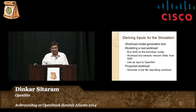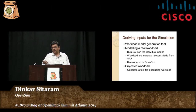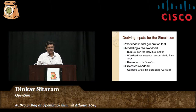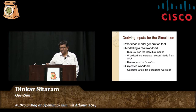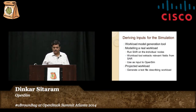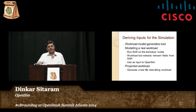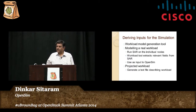One question is how do you derive inputs for the simulation. To model application performance accurately, you need to know a lot about how the application consumes resources. There are two ways of doing it. We have a workload model generation tool. If you're modeling a real workload, you run SAR on the individual nodes, and then the workload tool extracts the relevant fields from SAR and produces the input that OpenSim needs. The other case is where you have an artificial workload in mind and want to predict how it would work in OpenStack — for that you can manually generate a text file which describes the workload, using a documented format.